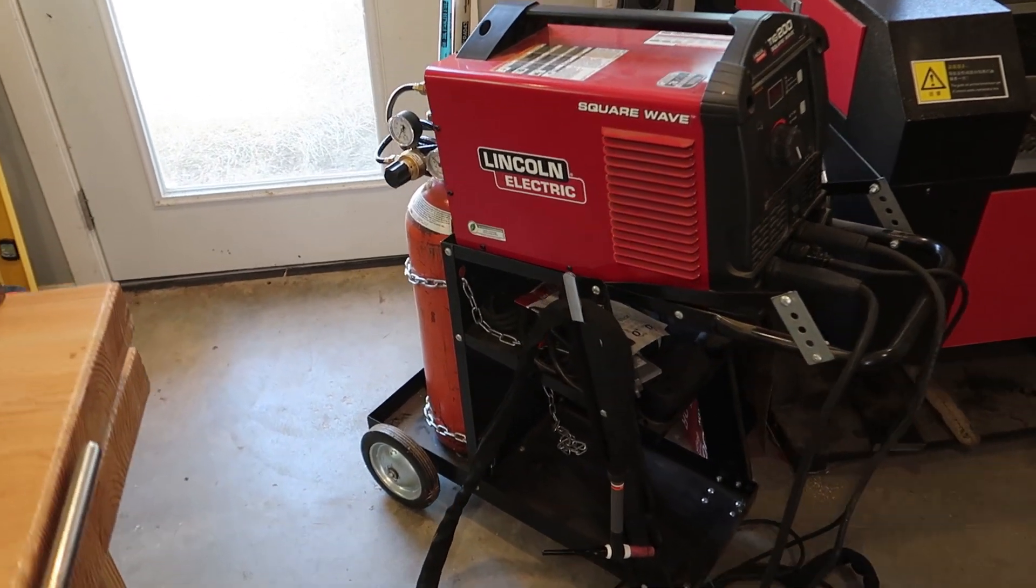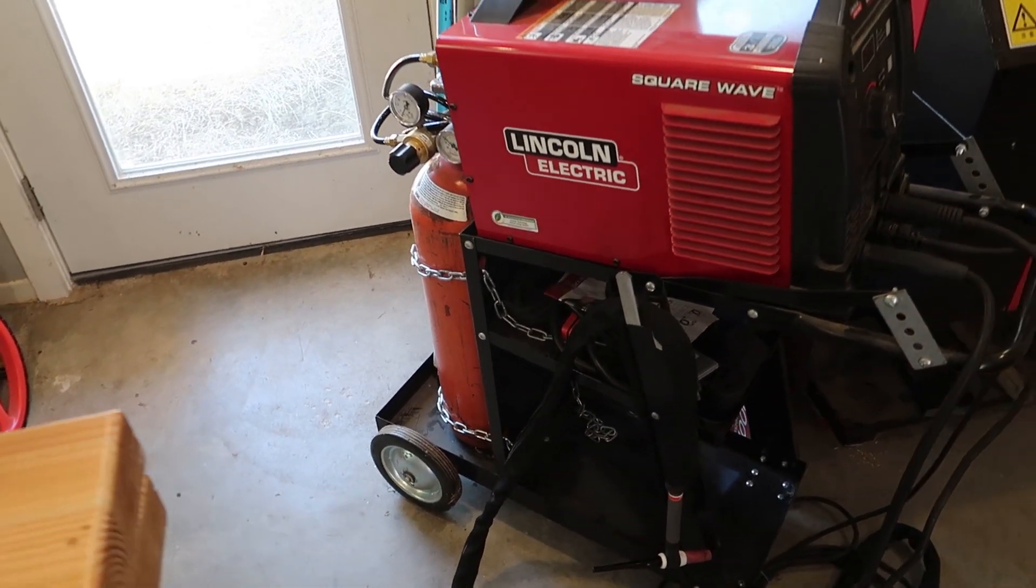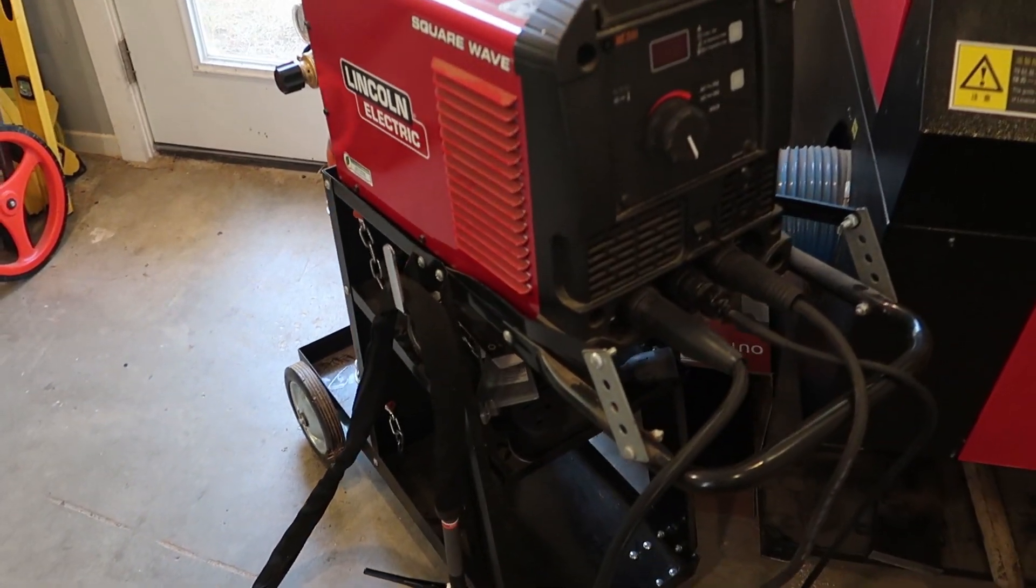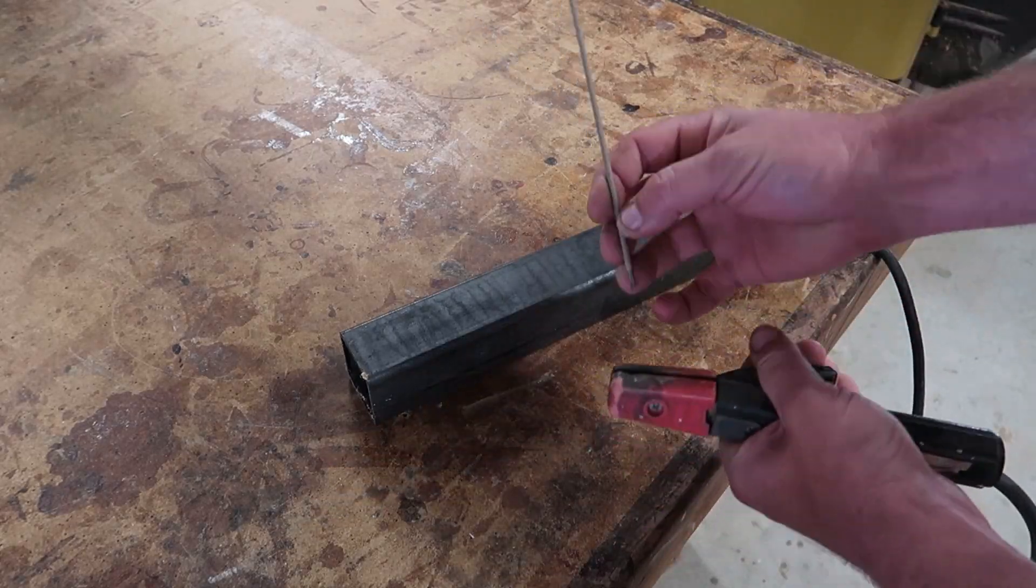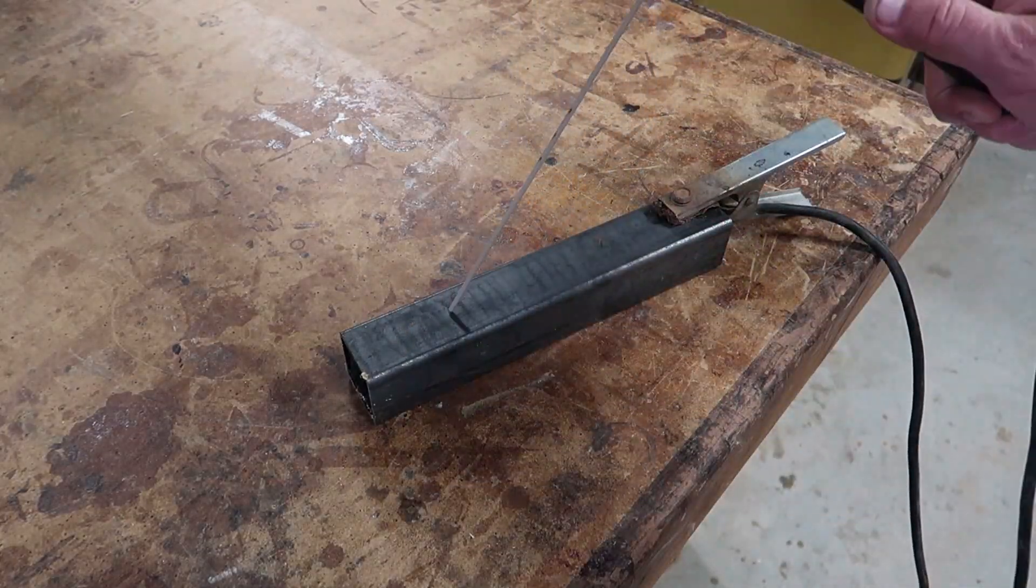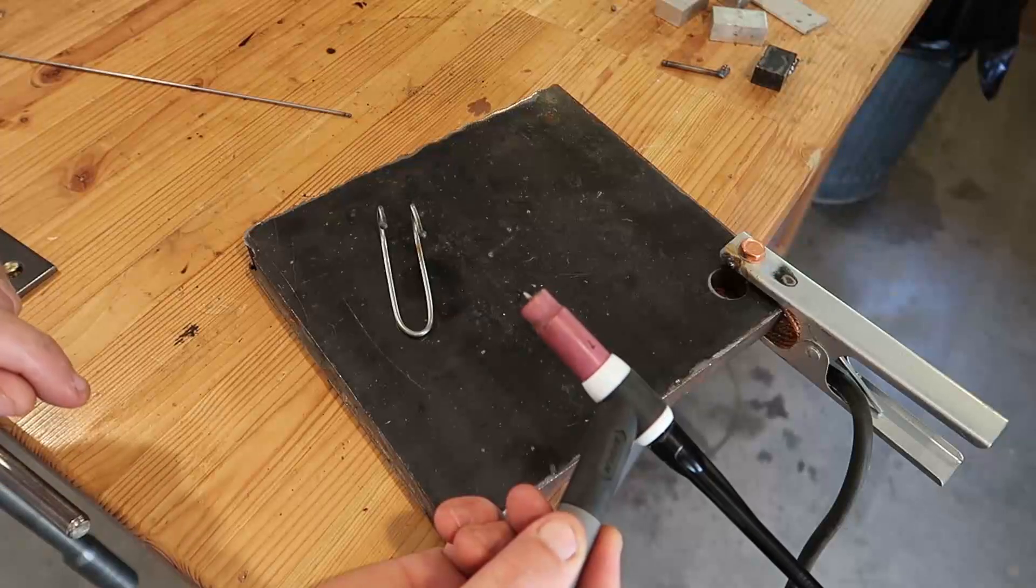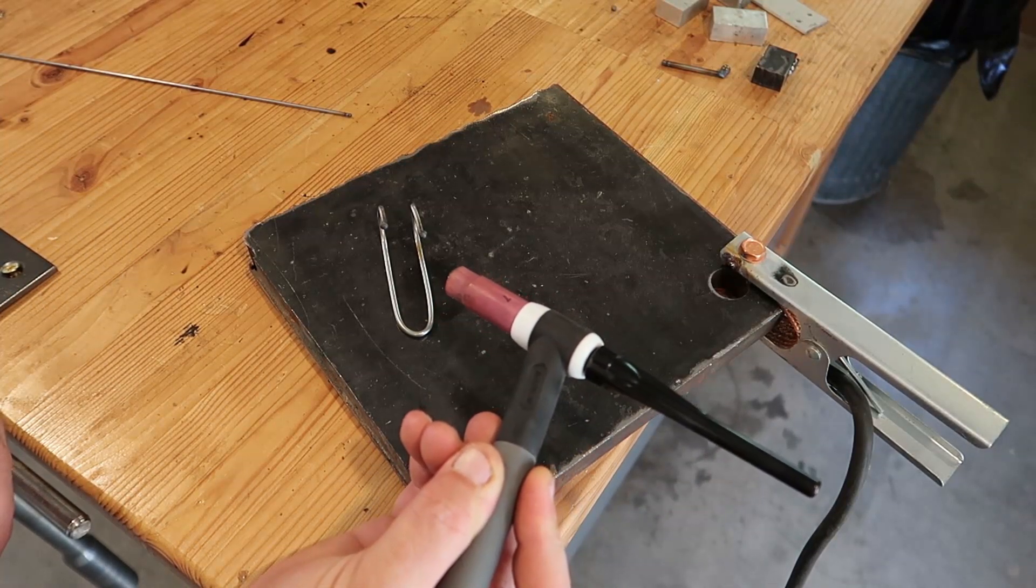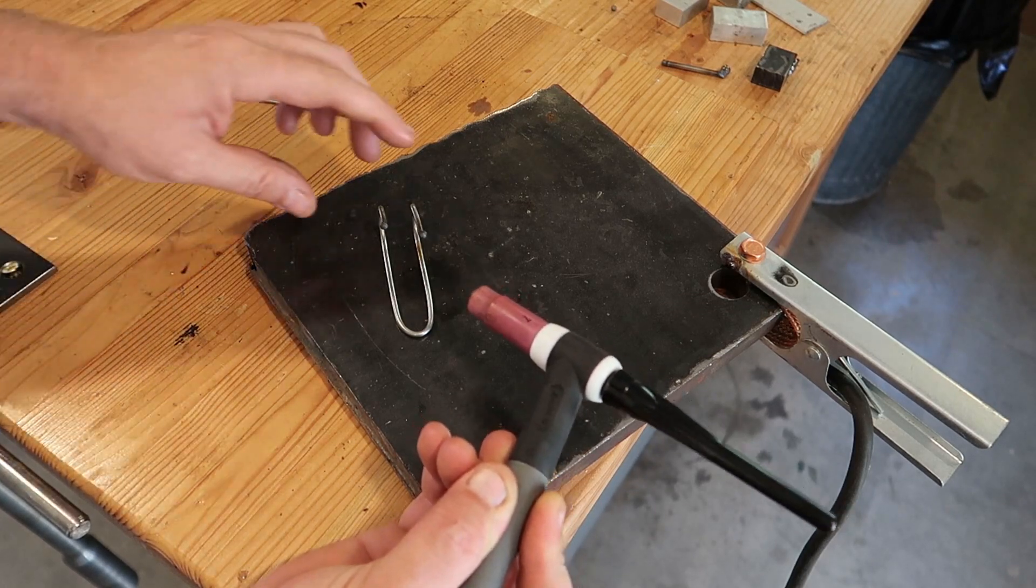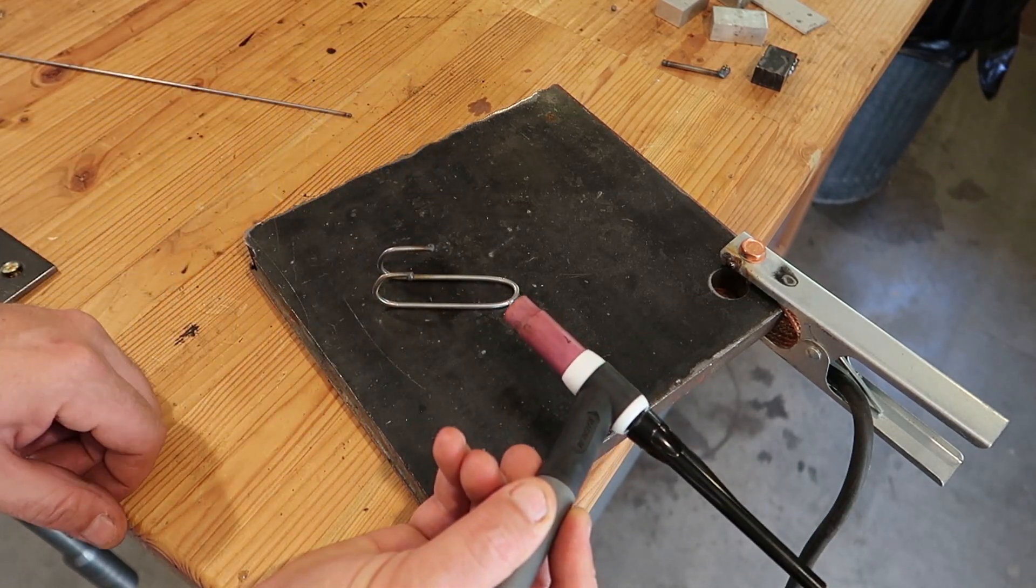So why TIG welding? Why is TIG welding so special? Well one thing that is really cool about a TIG welder, unlike using a stick welder or some sort of wire feed welder, both of those methods deposit metal as part of the process. You can't just use it like a torch, you're always melting metal onto whatever you're doing, and in this case I don't want to do that.